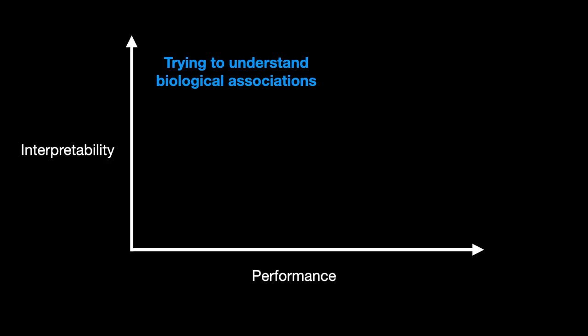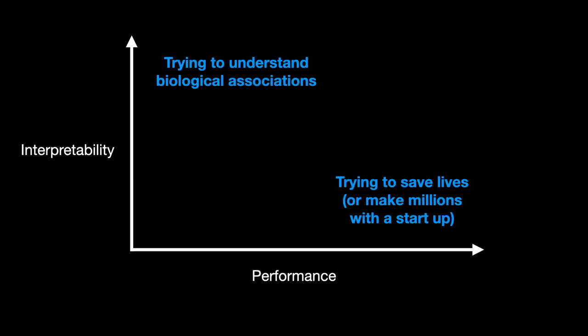We need to think about why we want a model in the first place. As with so many things in science, it depends on the question. If your interest is in the biological realm — trying to understand why a certain prediction was made — then interpretability is far more important. If I want to know what taxa, what genera go into predicting colon cancer, I want a highly interpretable model. If I'm more concerned with diagnosing people, I don't care why the model made the prediction — I want a high-performance model.